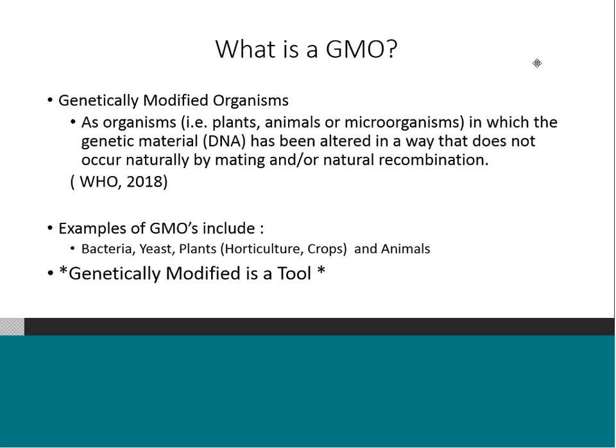This is not sweet potatoes, which have naturally had foreign DNA inserted into them sometimes hundreds of years ago. This is not plants that we are crossbreeding. These are ones where we are actually doing genetic engineering — altering them in a way not likely to happen in nature. Examples of organisms we've done this with include bacteria, yeast, plants, and animals. When you think of GMOs and genetic modification, I really want you to think of it as a tool more than anything else.